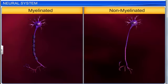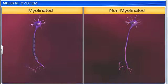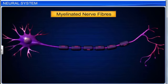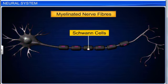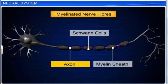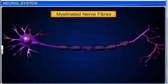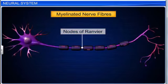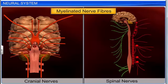Axons are of two types: myelinated and non-myelinated. Myelinated nerve fibers are enclosed by Schwann cells, which form a myelin sheath around the axon. The gaps between two adjacent myelin sheaths are called the nodes of Ranvier. These fibers are found in cranial and spinal nerves.